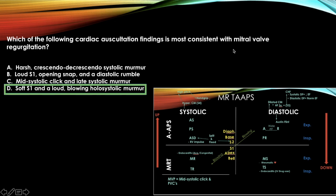The next question asks what mitral valve regurgitation sounds like. Find mitral regurg on the chart: it's a blowing systolic murmur best heard at the apex with the bell. The correct answer choice is a blowing holosystolic murmur with S1 heart sound.